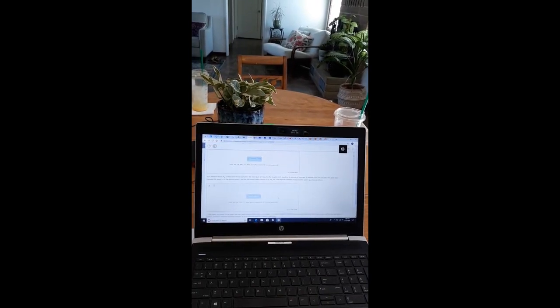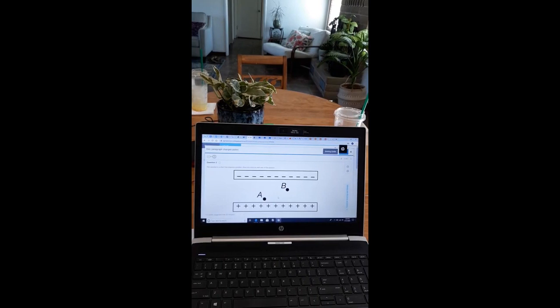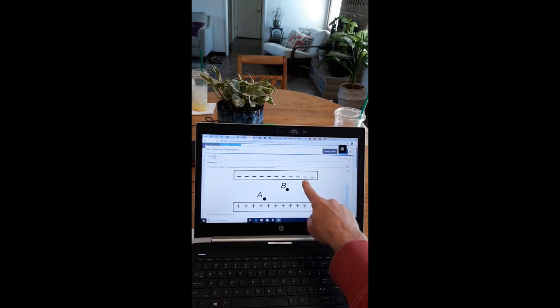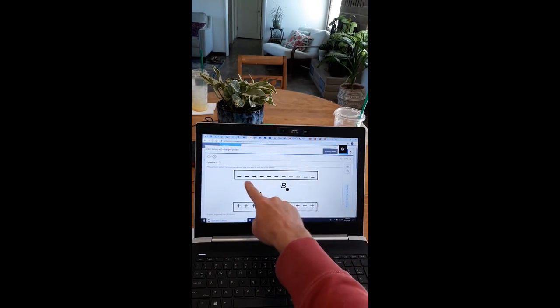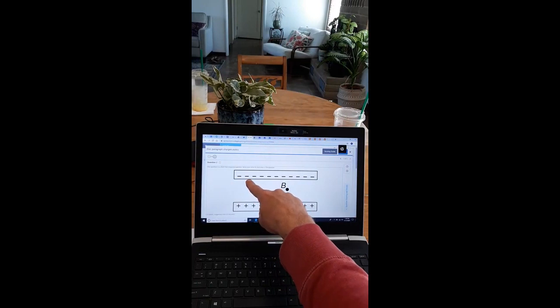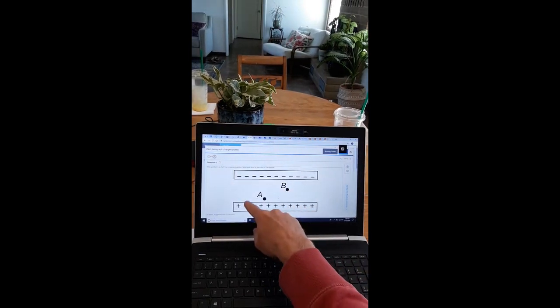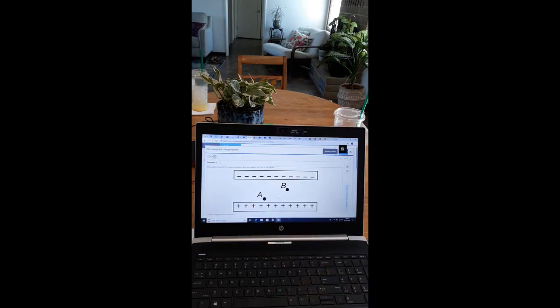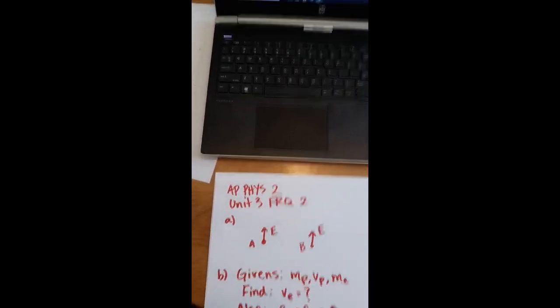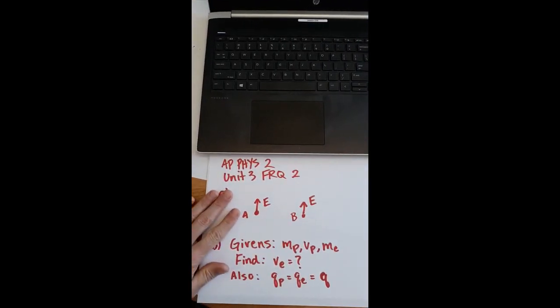Part B basically says, if I put a proton here, it would zip upward and have a velocity Vp when it reaches these negative charges. If I put an electron here, similarly it would zip downward and would have a velocity Vp when it reaches this point. And they want us to determine that speed Vp in terms of the mass of the electron, the mass of the proton, and also the velocity of the proton.